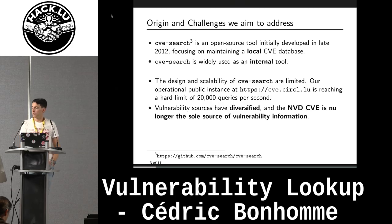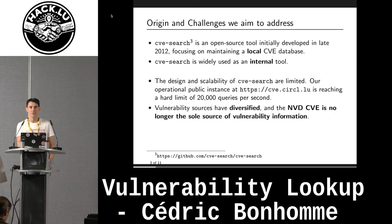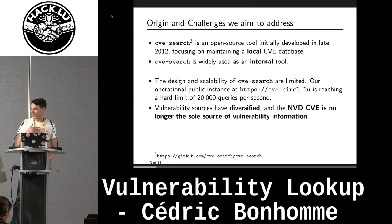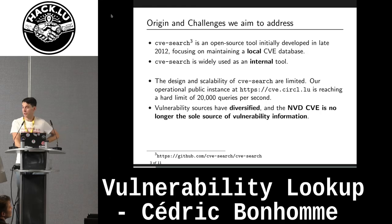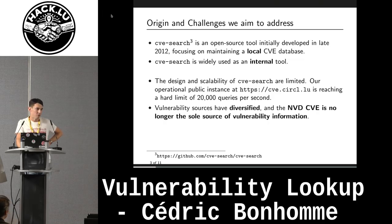We are also maintaining another open source software called CVSearch. You might know it, or maybe you've been using it for more than 12 years. It's in production now and really used by a lot of organizations. It was designed as an internal tool — the goal was to fetch CVE information and use it locally in your organization. But now we have around 15 to 20,000 queries per second on this service, so it's really heavily used and we are suffering some defects that we made back in the past.